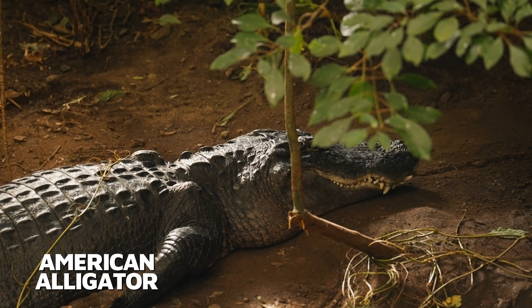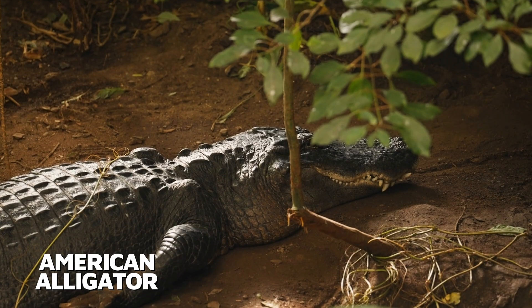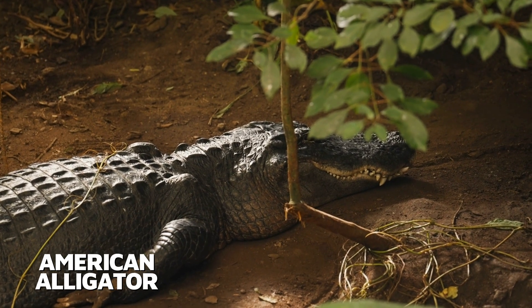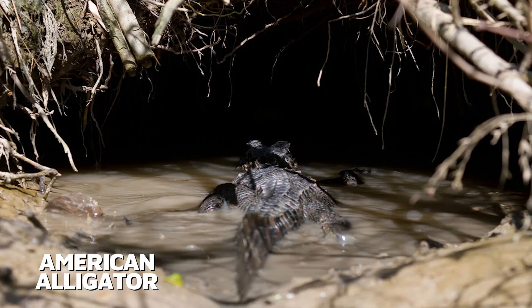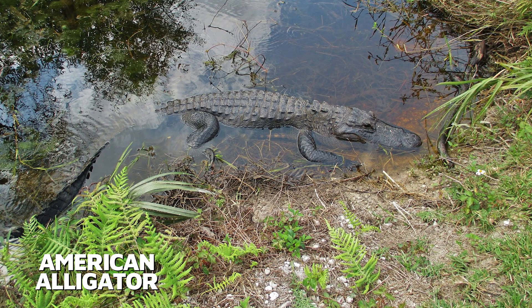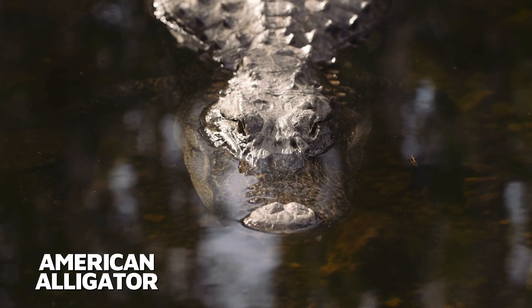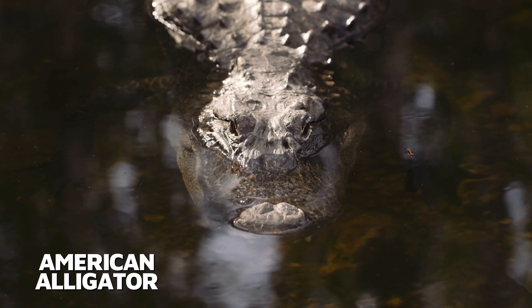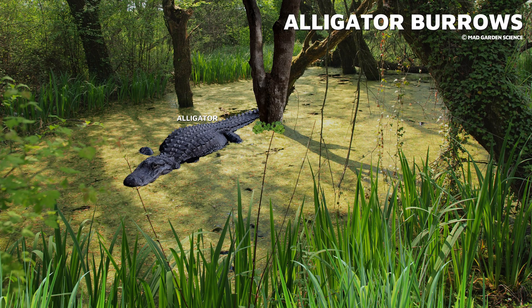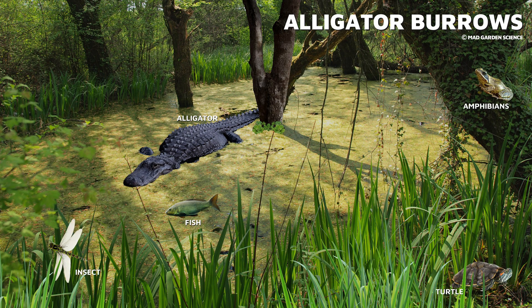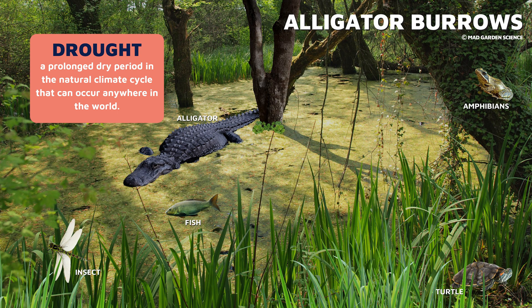During the dry season, alligators also serve as ecosystem engineers by digging depressions in the ground that fill with water. But the alligators aren't the only ones using these areas — other species of fish, turtles, amphibians, and insects that would otherwise perish during a drought hang out there.